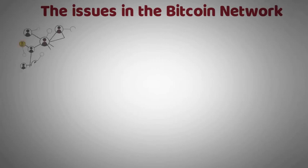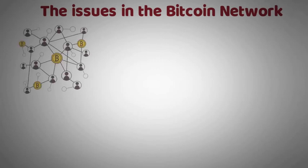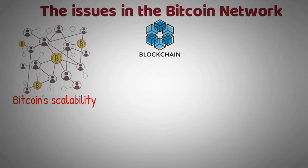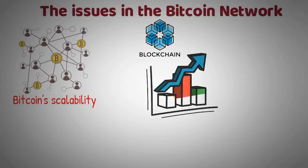The Issues in the Bitcoin Network. First, let us go back to those two issues of the Bitcoin network and start by discussing the first one, which is Bitcoin's scalability. The scalability of a blockchain network is the network's ability to support an increasing load of transactions and, at the same time, an increasing number of nodes.